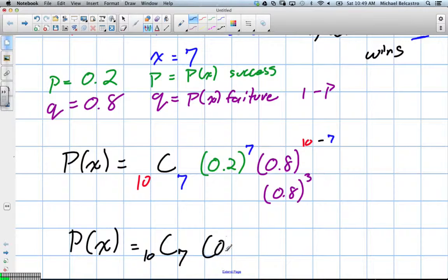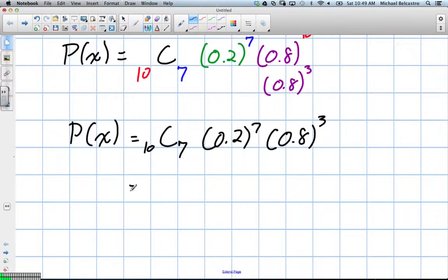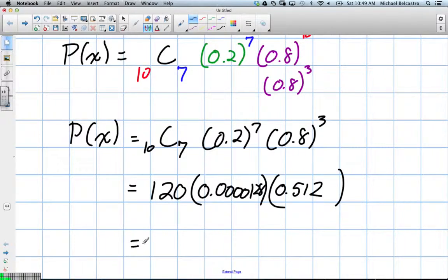So I'll write it all out in one step here. So do you want to calculate that combination for us? 10C7, 0.2 to the 7th times 0.8 to the... The combination is 120. 0.0000128. And then probability of failure: 0.512. Great.